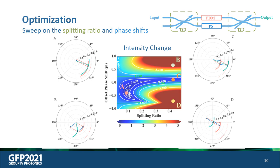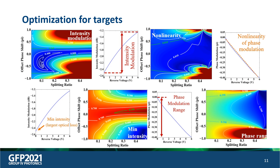We can also perform analysis for different targets — for example, for intensity modulators, for optical loss, or for the phase modulation range of the phase modulator.